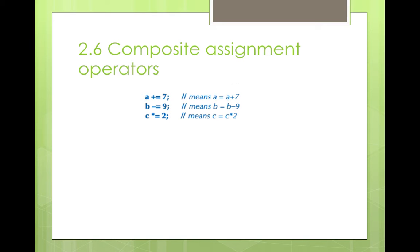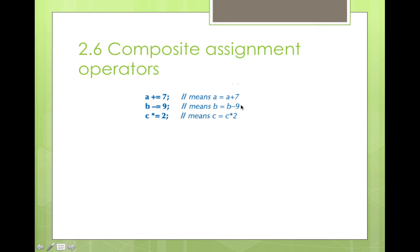Composite assignment operators - there's not much to say, it's just a shorthand way of writing. Remember a = a + 7 where a equals 4 gives 11. With composite assignment you'd write a += 7 instead. This looks more professional but means the same thing. Use whichever you're comfortable with - it won't really affect the outcome.